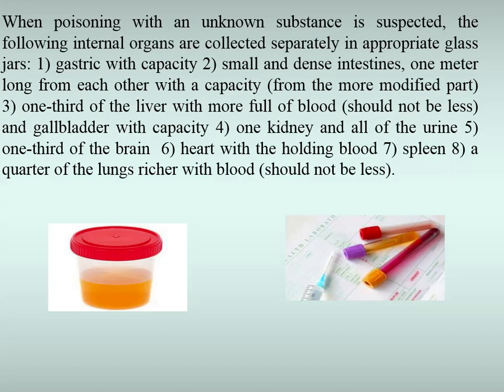When poisoning with an unknown substance is suspected, the following internal organs are collected separately in appropriate glass jars: stomach with contents, small and large intestines, one lobe from each kidney, one third of the liver with the gallbladder, one kidney and all urine, one third of the brain, heart with contained blood, spleen, a quarter of the lungs. In cases of suspected poisoning by injecting toxin into the uterus, rectum, subcutaneously, or intramuscularly, the uterus and rectum should also be included as material evidence.